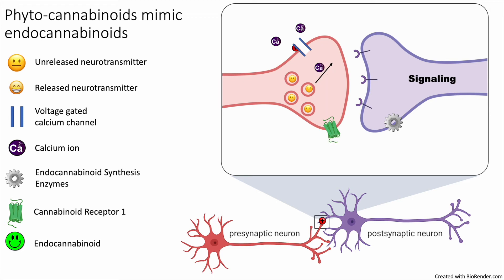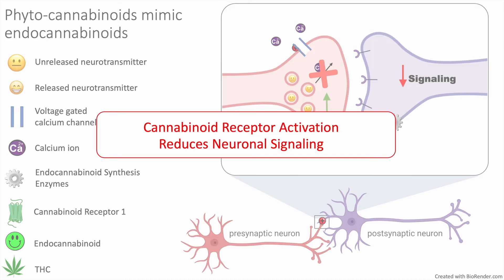Now when you take marijuana, THC will mimic endocannabinoids and bind to the endocannabinoid receptor. This results in decreased signaling in the postsynaptic neuron even though there is no excessive signaling occurring, resulting in an overall decrease in neurotransmitter signaling. So the ultimate effect of activation of the cannabinoid receptor by THC is that it reduces neuronal signaling. This mechanism is how it exerts many of its effects on the brain.